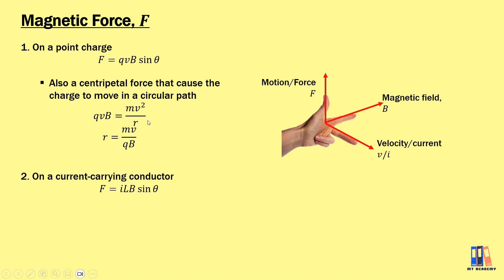We also learned how to derive from the magnetic force on a point charge to get the force on current-carrying conductors, which is equal to ILB sin theta. To get the direction of the force, we apply the Fleming left-hand rule, which you have also learned in SPM.